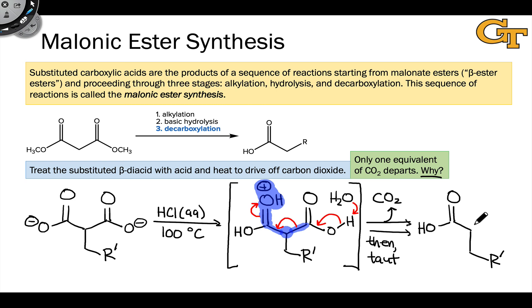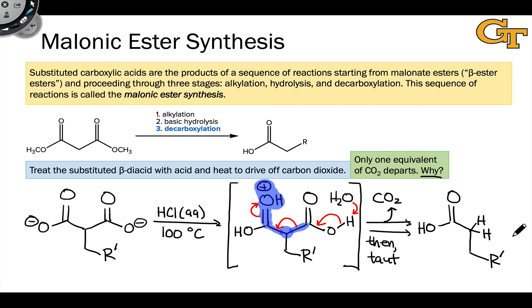The net result is the substitution of the alpha carbon of something that looks like acetic acid with an electrophilic CH2R' group. A second decarboxylation event can't occur — the first depended on protonation of the carbonyl group that does not become part of CO2. In the final carboxylic acid, we're missing that second carbonyl group, so there's no good leaving group after protonation. Protonation of this carbonyl oxygen wouldn't lead to the elimination of any CO2 elsewhere because there is no other CO2 group in the molecule. Only one equivalent of CO2 departs because we're relying on that proton transfer to set up the enediol leaving group.